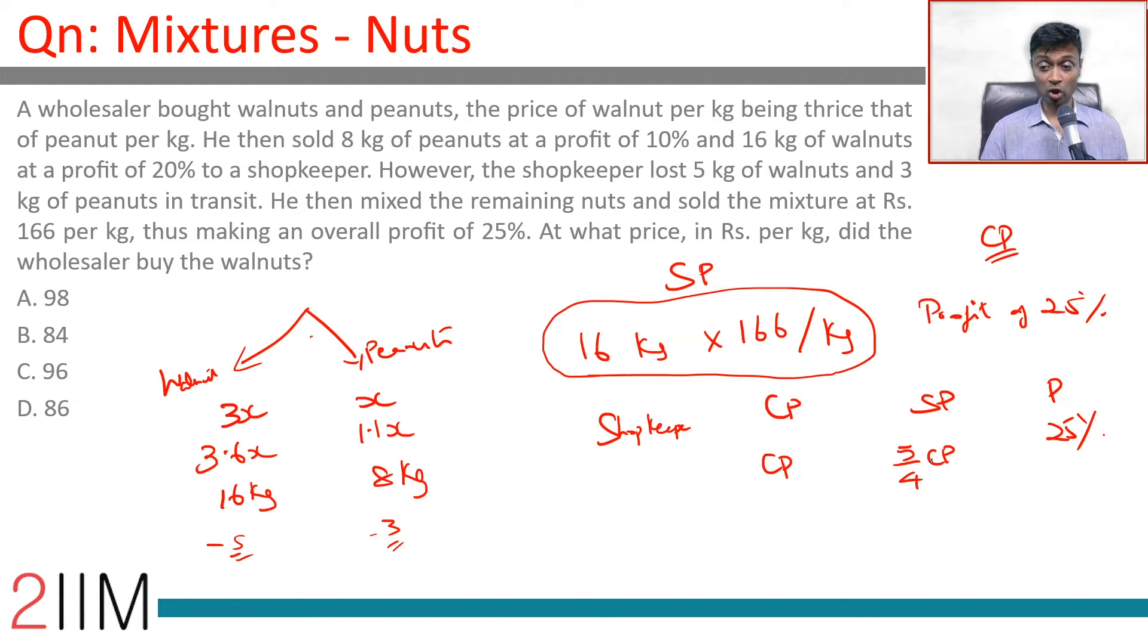What is cost price? Cost price is how much he spends in buying this. You buy 16 kilograms at 3.6x, 8 kilograms at 1.1x. So 3.6 into 16,